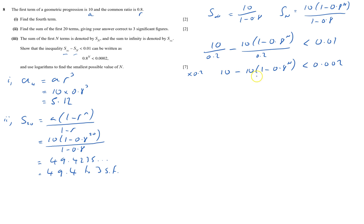And then multiply out the brackets, this gives me 10 minus 10 minus minus, that'll be plus 10 times 0.8 to the power of n is less than 0.002, and 10 minus 10 will disappear.